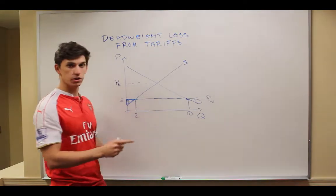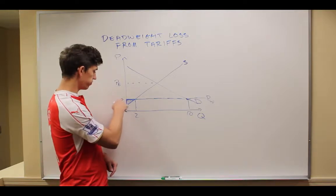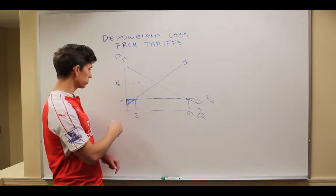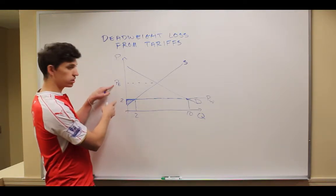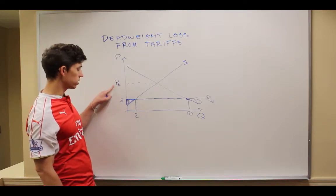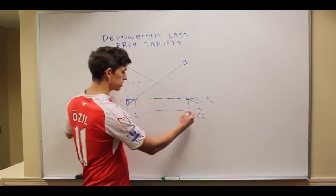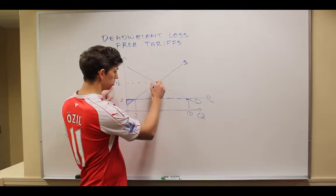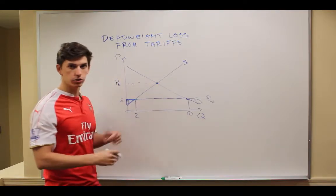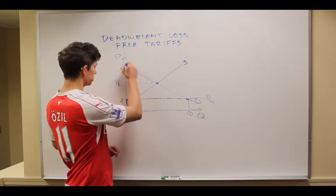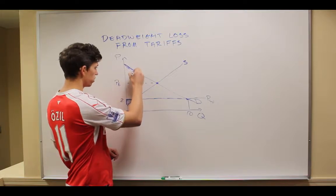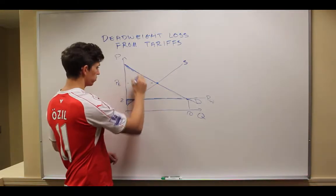The consumer surplus in this market, when they're engaged in free trade at a world price of 2, because $2 is considerably lower than the equilibrium price, and because they get to buy 10 units as opposed to what they would in equilibrium with no trade, their consumer surplus is this entire big triangle here.